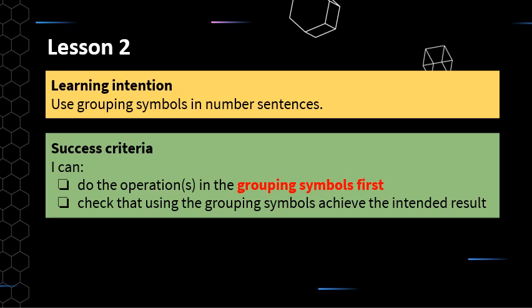Yesterday we looked at the order in which we put numbers and operations in a number sentence, and how that can change the answer or the intended result. Today we're looking at using these things called grouping symbols. Your success criteria: make sure you do the operations in the grouping symbols first, and check that using the grouping symbols achieves the intended result.